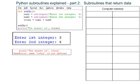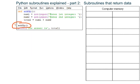Watch the order of things happening in this program and you will see why this program crashes. The subroutine AddUp is called, so Python jumps back up the program and runs the code inside the subroutine AddUp.